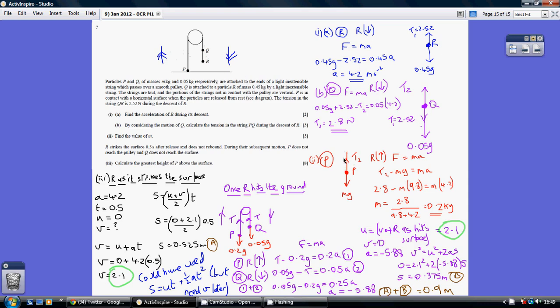So if we resolve upwards now, our tension is the greater force. So T2 minus the weight, minus MG, equals the mass times the acceleration. Mass for P being the unknown, acceleration being what we've worked out already, 4.2. So rearranging and factorising, we can work out that M, our only unknown, equals 0.2.